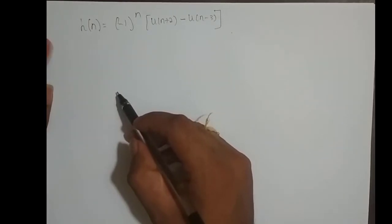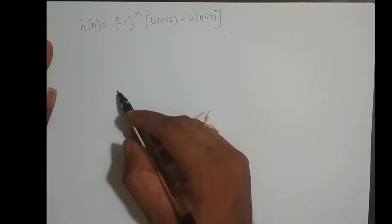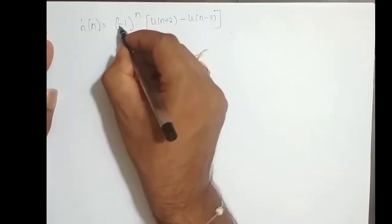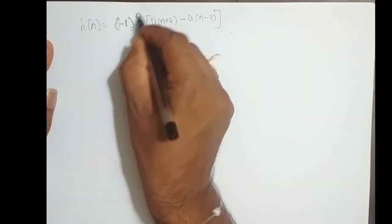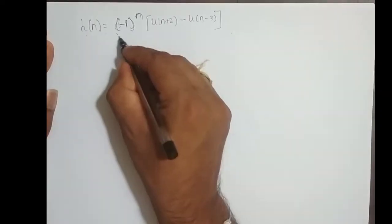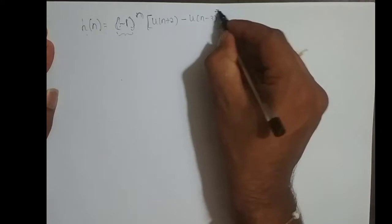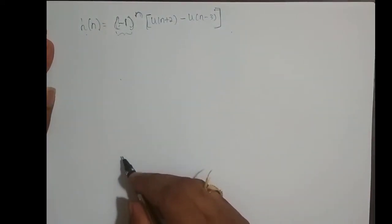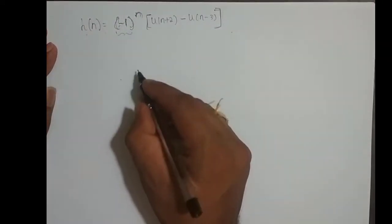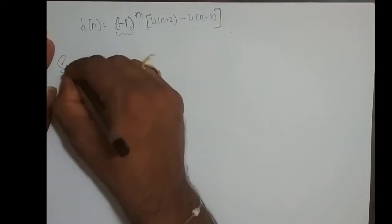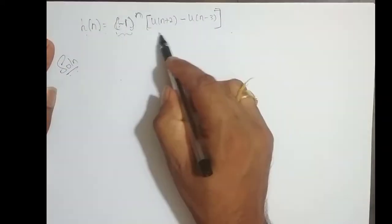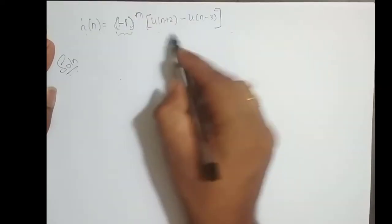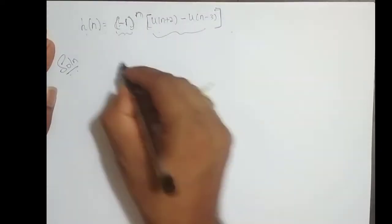Hey guys, we shall take a few more examples on finding step response. Let h(n) equal minus 1 power n. This is one signal times u(n+2) minus u(n-3). This is nothing but a rectangular pulse multiplied with this sequence. We shall plot this first.